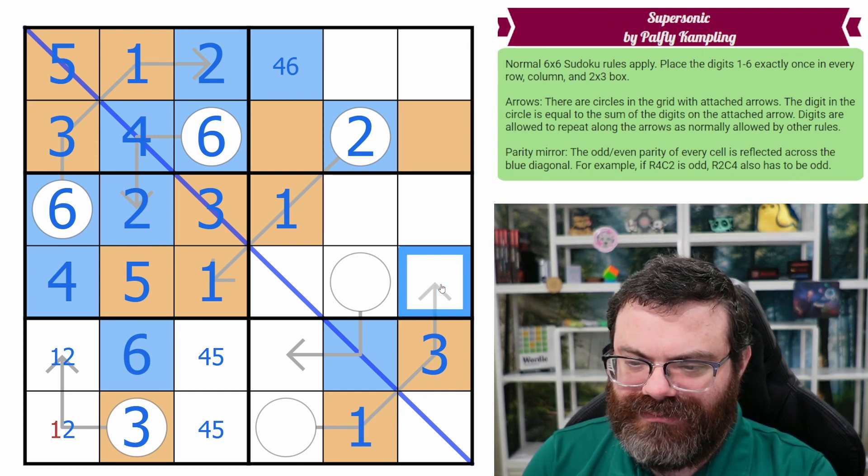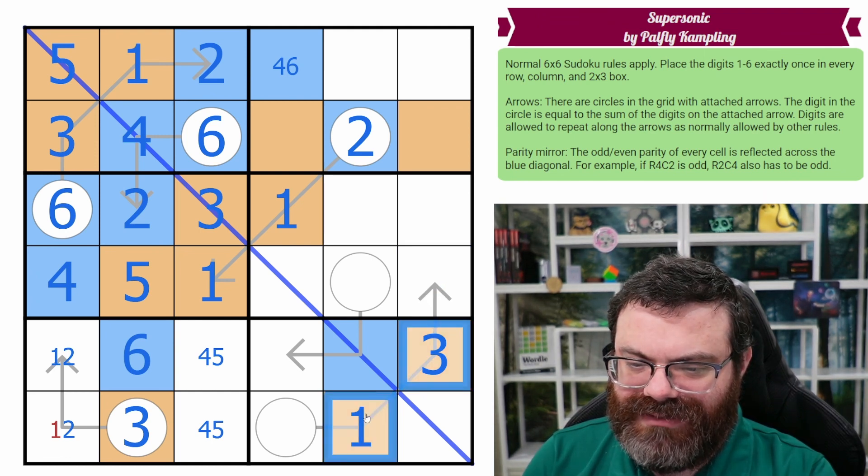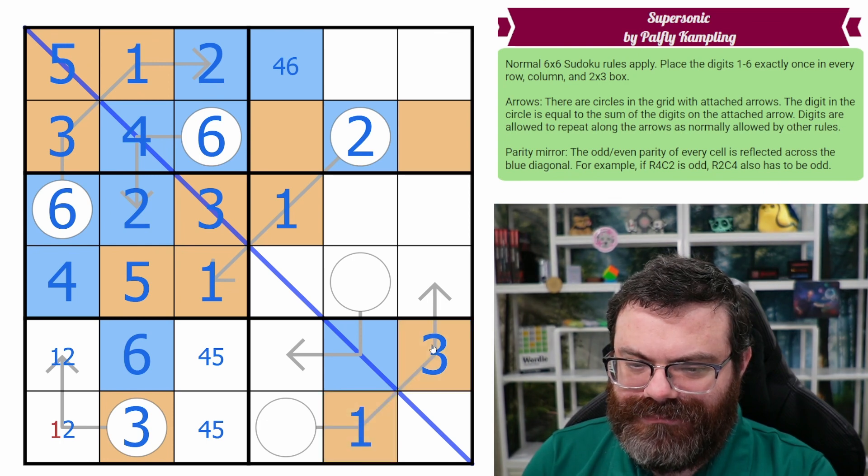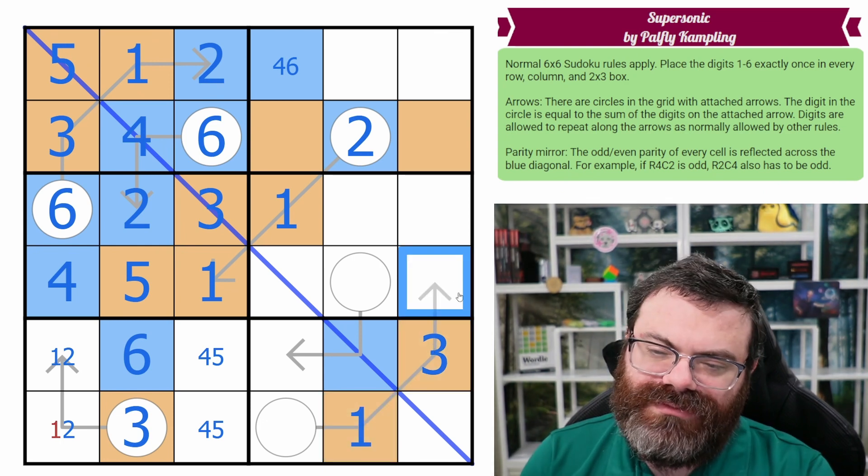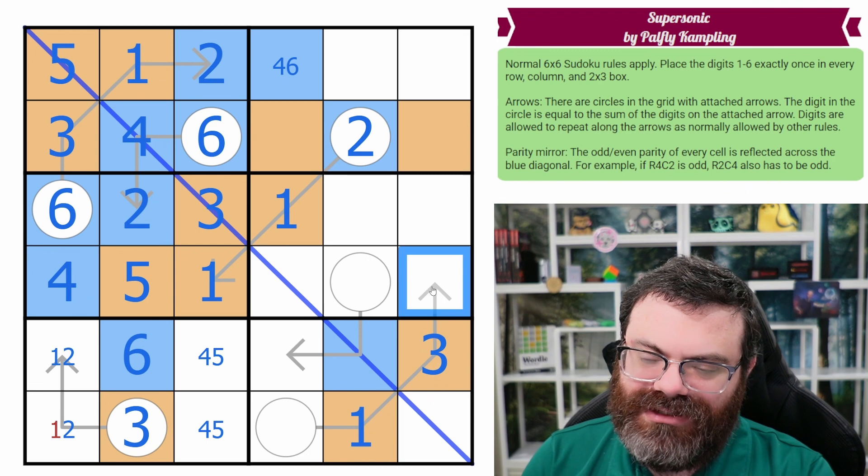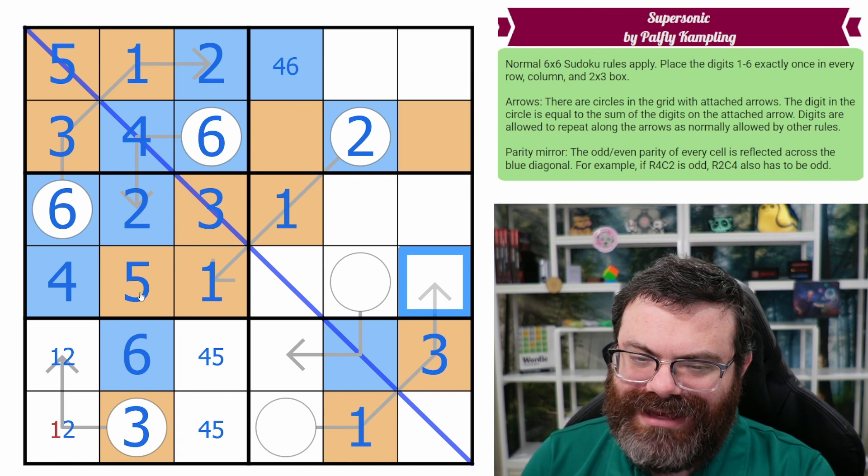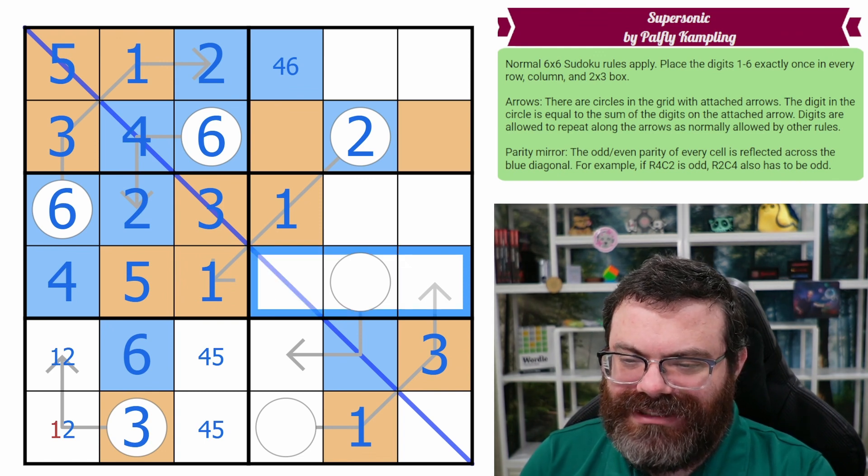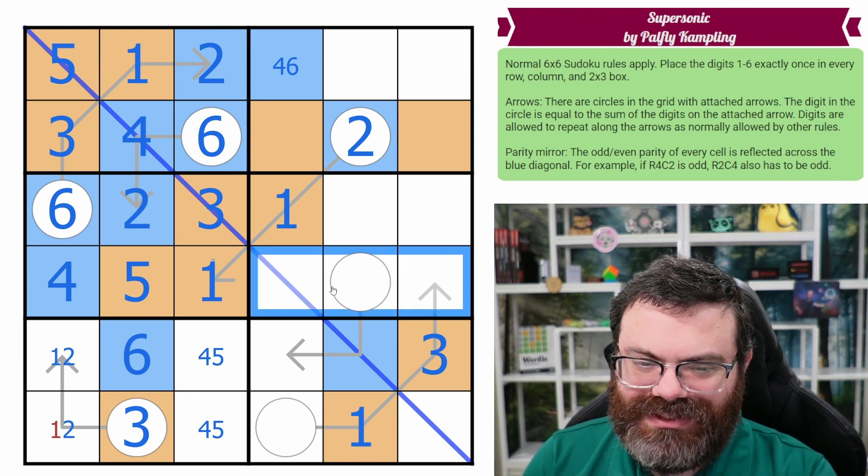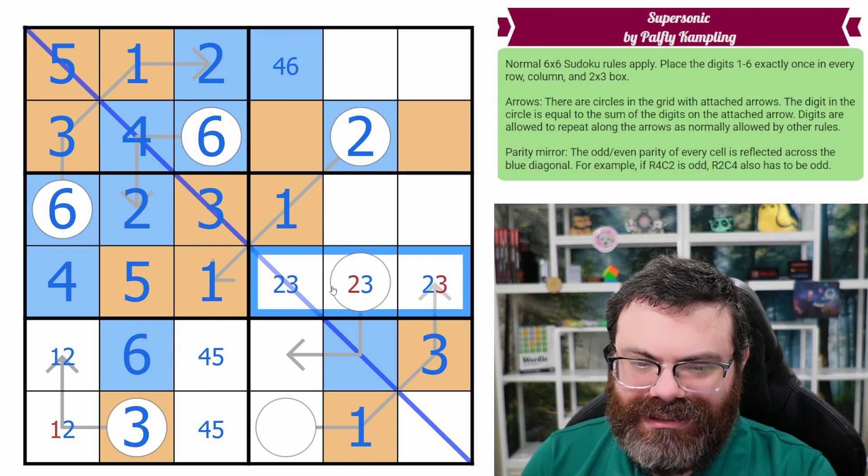Wait, why did I say this was even? I think I made a mistake saying that was even. But we actually know now that this can only be a two because it can't be a one and three. It can't be a three. So yeah, let's just fill this triple here. This triple is two, three, six.